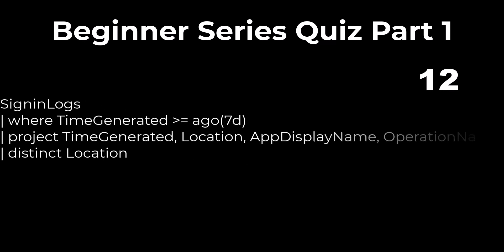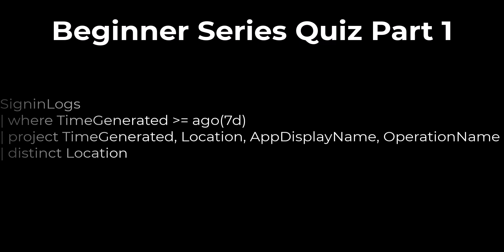Problem 2: The output of this query will display four fields. In KQL, the order statements are made affects the output results. In this case, we're taking records from the sign-in table in the last seven days and projecting four fields. But the final distinct location will only produce one field with all the unique location values, so the project line can be removed and the same result will occur. The answer is false.